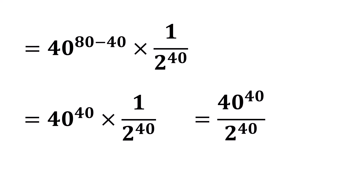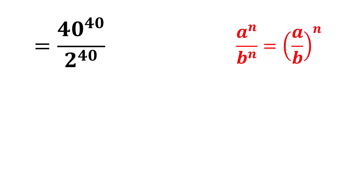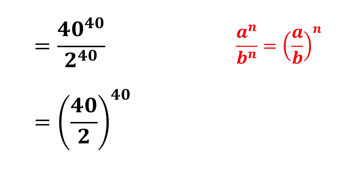We can rewrite this as 40 to the power 40 divided by 2 to the power 40. Now, according to the exponential law that says a to the power n over b to the power n equals a over b to the power n, we can rewrite the expression as 40 over 2 to the power 40. Now we will get 20 to the power 40. And that is our solution.